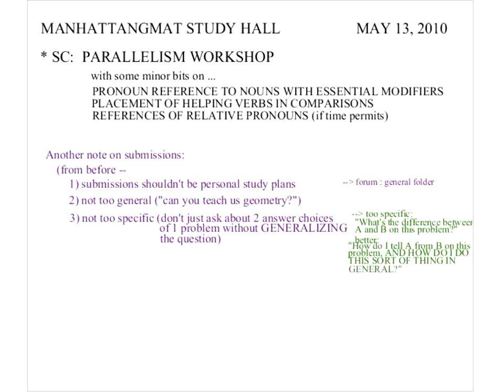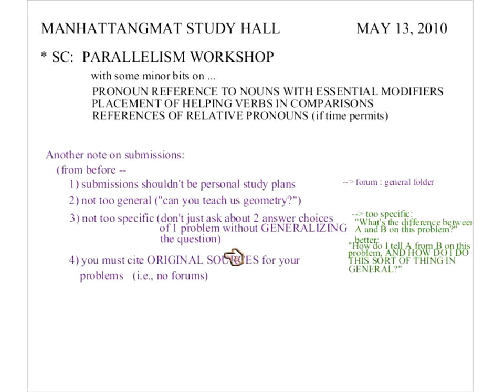Most importantly, some of you are still not doing this: you must cite original sources for your problems. This means you have to cite where the problems are from, and this must be original — no forums. Some of you are saying 'I got these problems from GMAT Club' or 'from the Beat the GMAT forum.' Those are not original sources because those are forums. Forum people don't write problems — they answer problems that already exist. So those are all second-hand. We are constantly dealing with copyright issues here.